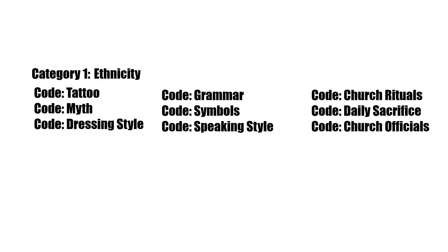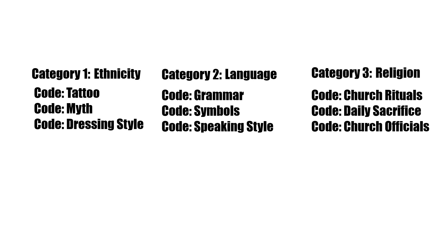I would put the first group under 'ethnicity' — it's about ethnicity. Then the next code is about 'language.' And the next code I would categorize into 'religion.' After categorizing, if you think all of these categories could be grouped into one, you can consider that as your theme. For example, if you're researching about describing culture, this would talk about the personal identity or the identity of the culture. So that would be about coding and categorizing.